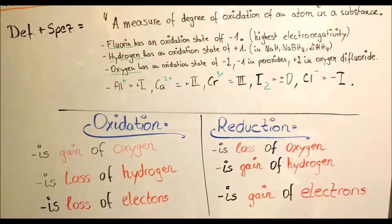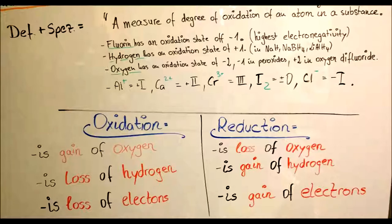Our task today is to complete and balance fluorine half reactions, and in each case indicate whether the half reaction is oxidation or reduction. The definition of oxidation state is the measure of the degree of oxidation of an atom in a substance. Fluorine has a minus one oxidation state and is the most electronegative element. Hydrogen has plus one, and oxygen has different oxidation states: normally minus two, minus one in peroxides, and plus two in oxygen difluorides.